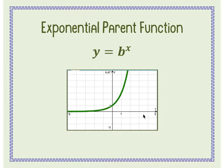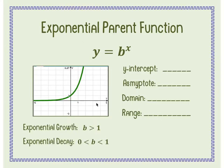The main components of this are exactly the same whether I put a 2, a 3, or a 4. They're going to have the same asymptote, the same y-intercept, and the same labeling of whether it's a growth or a decay. So we're going to fill in everything we can about this graph.